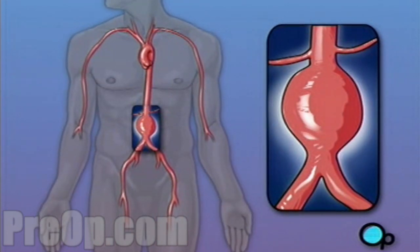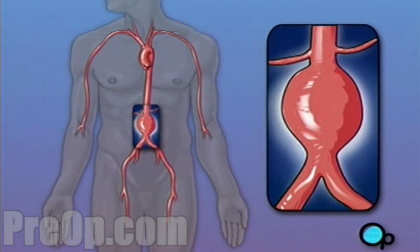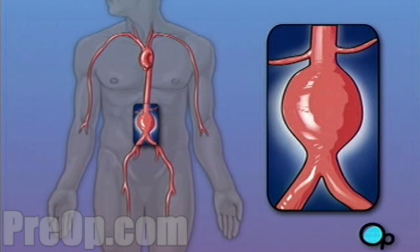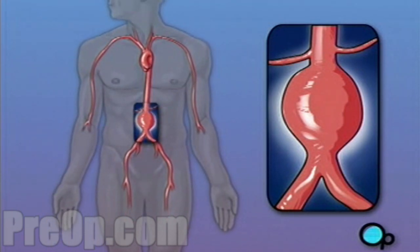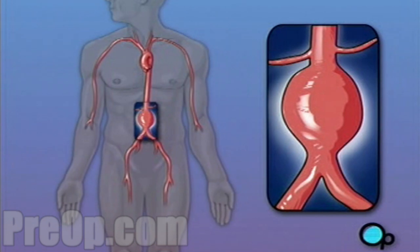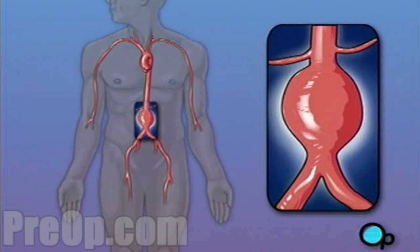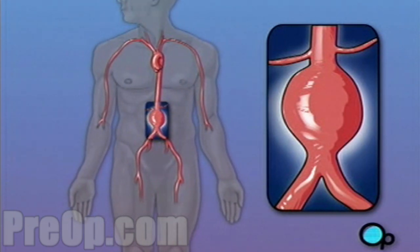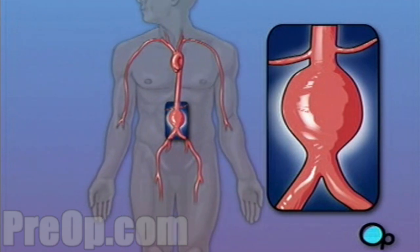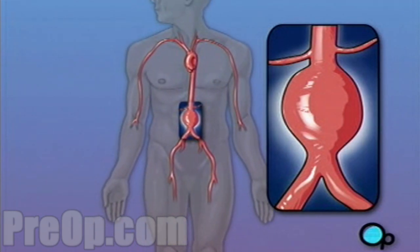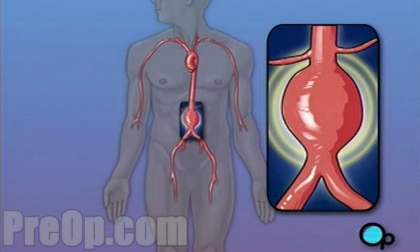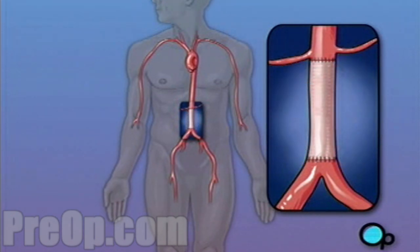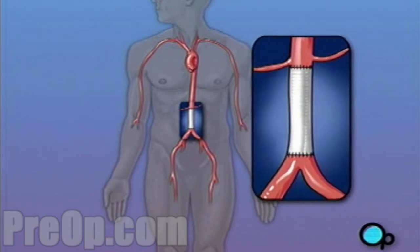In your case, your doctor has determined that a portion of the aorta passing through your abdomen — the area between your legs and chest — has developed a blood clot. In most cases, the clots are caused by fatty deposits that build up inside the arteries. Aneurysms are dangerous because the blood clot weakens the blood vessel and can cause it to burst. The surgery your doctor has recommended will remove the blood clot and reinforce the weakened wall of the aorta.